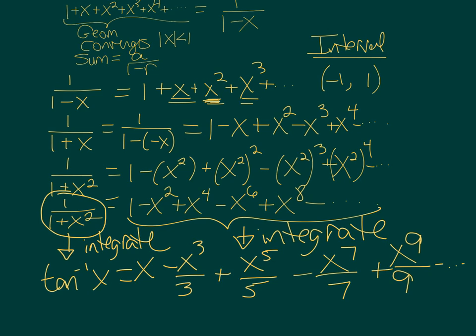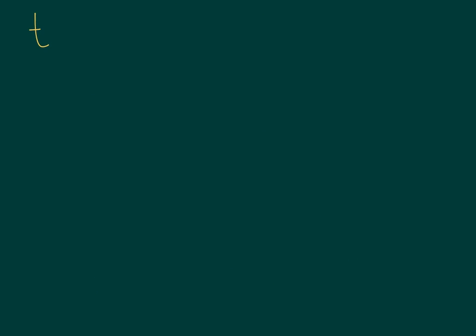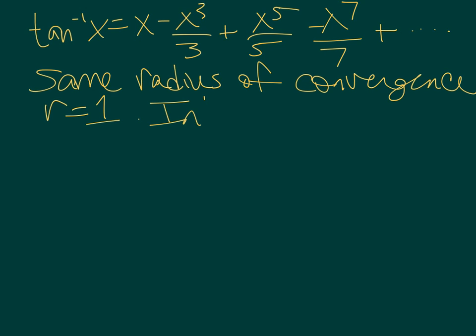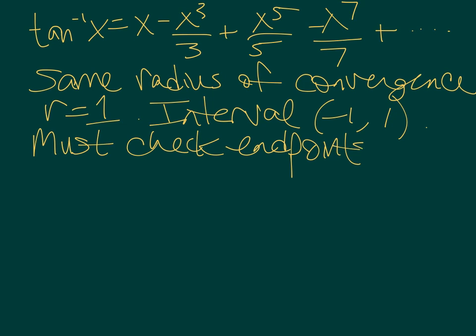The one step that's left is to find the interval of convergence. Tan inverse of x equals x minus x³ over 3 plus x⁵ over 5 minus x⁷ over 7 plus x⁹ over 9, etc. And the theorem tells us that the radius of convergence is the same as the series we started with. So the same radius of convergence. That radius of convergence was 1, or the interval might be -1 to 1, but we must check the endpoints separately.